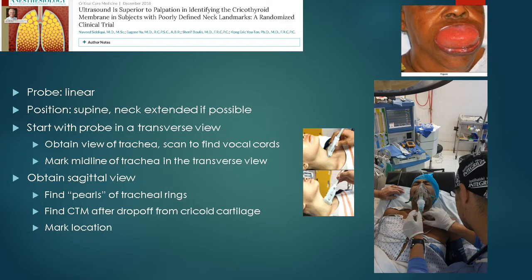Then flip to a sagittal view and look for the pearls of the tracheal rings. The pearls are these dark hypoechoic, round structures that represent the cartilage of the tracheal rings. From there, scan up until you find the cricothyroid membrane as it drops off from the cricoid cartilage, and once again mark the location of the cricothyroid membrane using the midline marker on your probe.